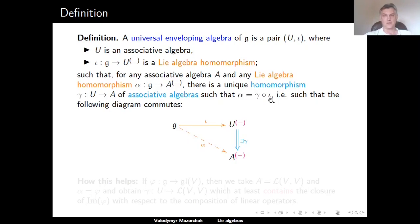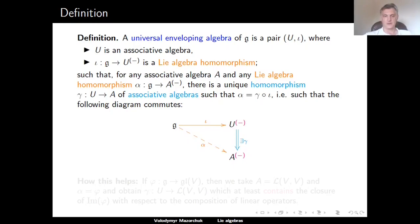Moreover, this pair should satisfy the following condition: for any associative algebra A and any Lie algebra homomorphism alpha from G to the Lie algebra associated with A, there should exist a unique homomorphism of associative algebras, denoted gamma, from U to A, such that alpha factors as gamma composed with I — that is, such that the following diagram commutes. In this diagram, I is a Lie algebra homomorphism from G to the Lie algebra associated to U, alpha is a Lie algebra homomorphism from G to the Lie algebra associated to A, and gamma is a homomorphism of associative algebras from U to A.